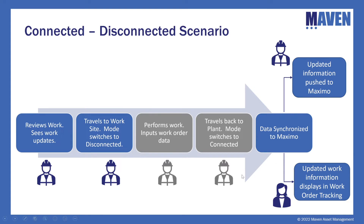The technician travels back to the plant at the end of the day and switches back to connected mode. Maximo then synchronizes with his local data store — he pushes the work order information he inputted up to Maximo, and at the same time Maximo pushes back any updates to his local device. As data is synchronized, the technician's local information goes up to Maximo, and an individual in the Maximo desktop application, such as work order tracking, sees this information.